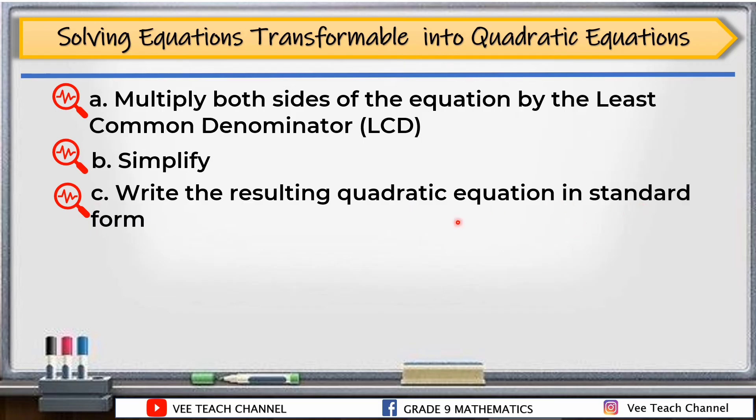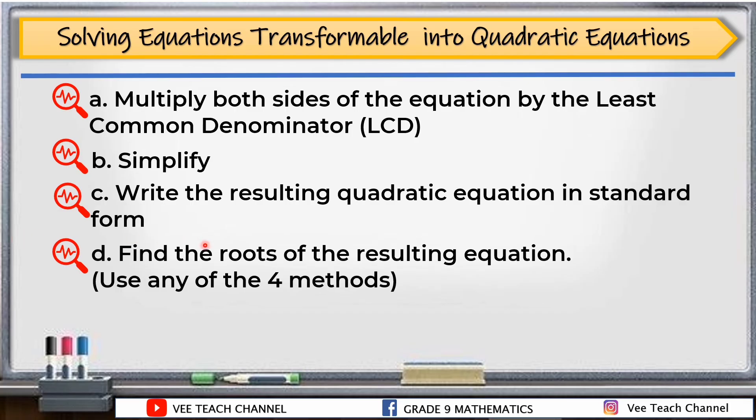Then simplify. After simplifying, write the resulting quadratic equation in standard form. If your equation is written in standard form, that's when you find the roots using any of the four methods. Choose whichever method is appropriate. And of course, the last thing to do is to check against the original equation.